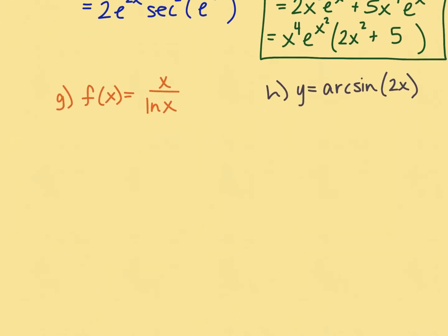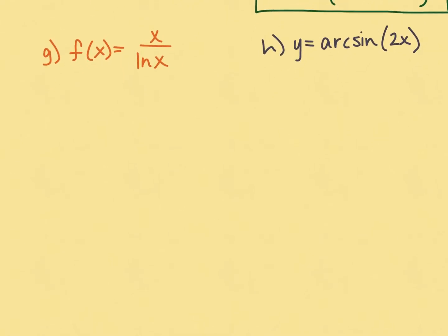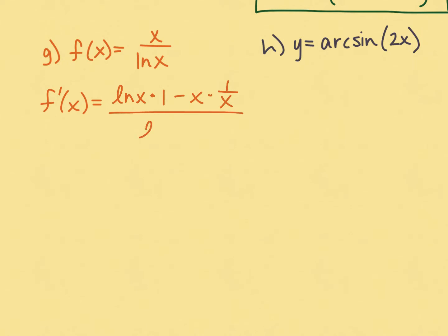In part g we have a quotient, so we use the quotient rule because both the numerator and denominator contain x. Low d high minus high d low, all over the square of what's below. So we have low d high — the denominator times the derivative of the numerator — minus high d low, all over the denominator squared. Cleaning up: the first term is the natural log of x, the second term is minus 1, all divided by the natural log of x quantity squared.